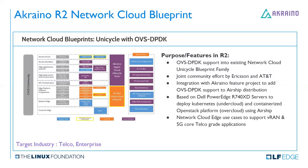This is the Network Cloud Blueprint unicycle with OVS-DPDK. It's a joint committee effort by Ericsson and AT&T, integrating with an Akraino feature project to add OVS-DPDK support to L-Ship distribution. The use case is to support VRAN and 5G core telco-grade applications.